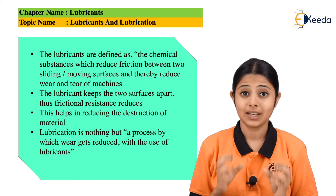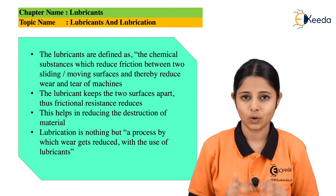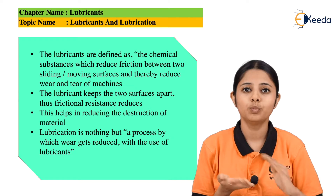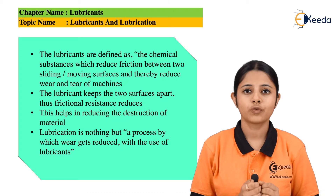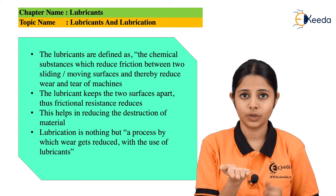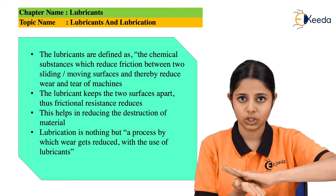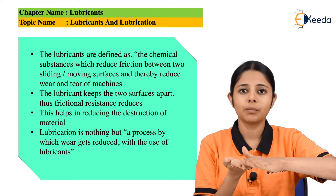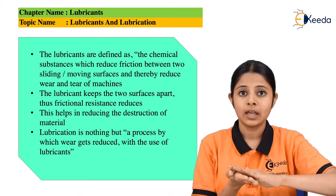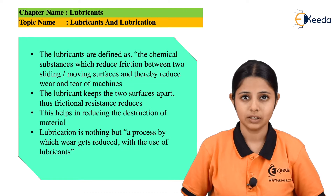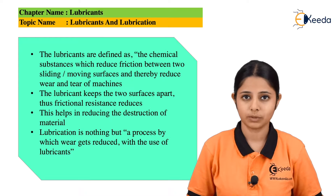Lubricants are nothing but chemical substances which reduce the wear and tear or reduce the friction between two moving surfaces, also known as frictionating surfaces. For example, if I have a machine part over here and a second machine part moving on it, there can be a certain amount of friction or wear and tear between these two parts. If I put a lubricant in the middle, that will reduce the wear and tear and the friction of the machine.